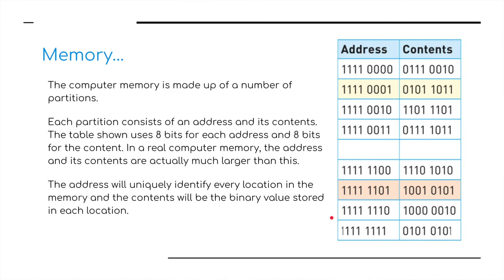Memory is made up of two partitions: the address — where something lives — and the content — basically the information or the data. Each partition consists of an address and its contents. The table shown uses eight bits for each address and eight bits for the content. In a real computer, the address and its contents are much larger than this. The address will uniquely identify every location in memory, and the contents will be the binary values stored in each location.